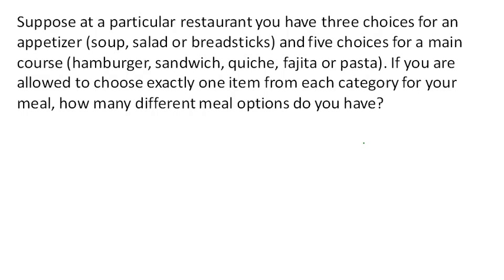Here's an example. Suppose at a restaurant you have three choices of appetizer, five choices for a main course, and you're allowed to choose exactly one from each category. How many different meal options do you have? There are several ways to approach this. One way that I like is called a decision tree.